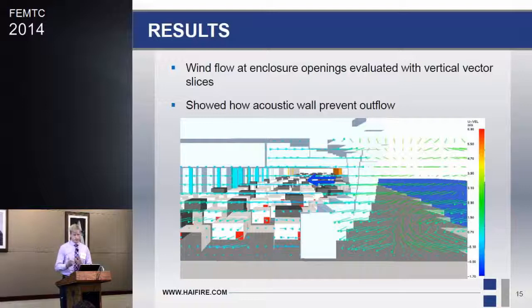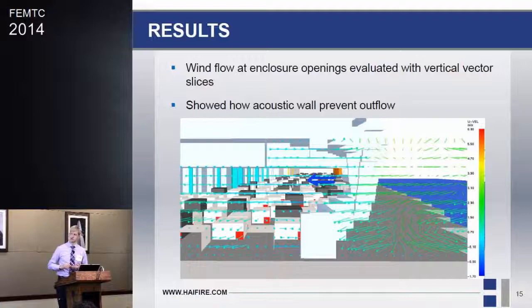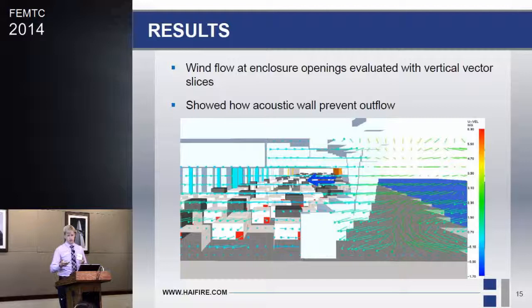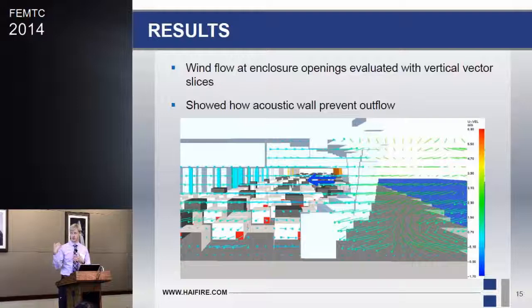There was some back-and-forth about the acoustic wall, so we ran cases both with and without it. Looking at a velocity slice through the roadway, with the wall in place, wind from the river hits the wall and creates a vortex, resulting in only one-directional flow — which leads to CO buildup. Without the wall, we saw lower concentrations because there was bi-directional flow recycling the air back out. But since the wall was going to be built, that's what we used in the final runs.